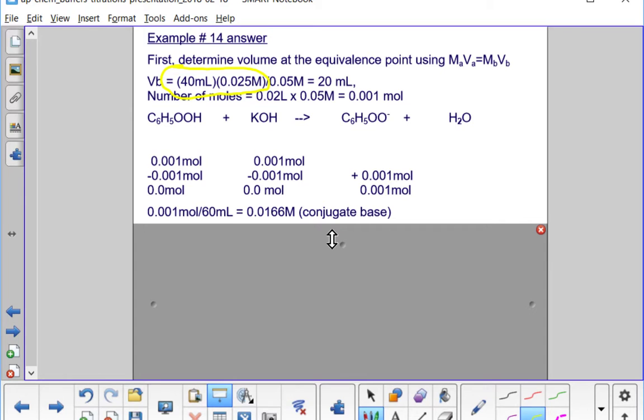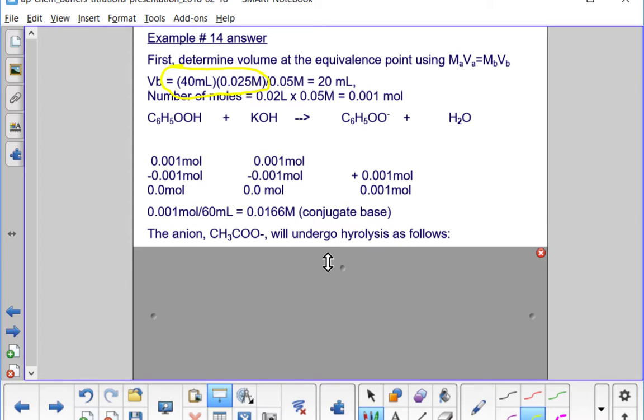So we have a concentration of conjugate base, 0.0166 molar conjugate base. And that conjugate base is the conjugate base of a weak acid, so it will hydrolyze water.